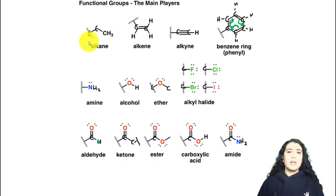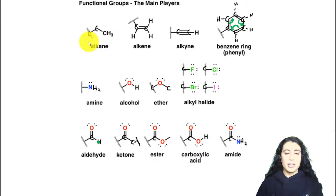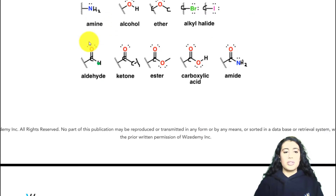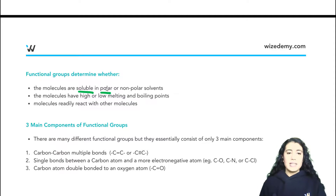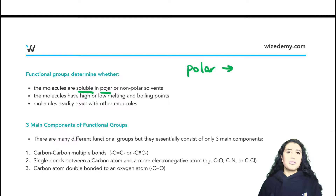If we compare that to an alkane, it's just a very large carbon chain with no polarity — it's a nonpolar molecule. So just knowing functional groups can help us get an idea of if something is polar or soluble. If something is polar, it's going to be able to dissolve in polar solvents.